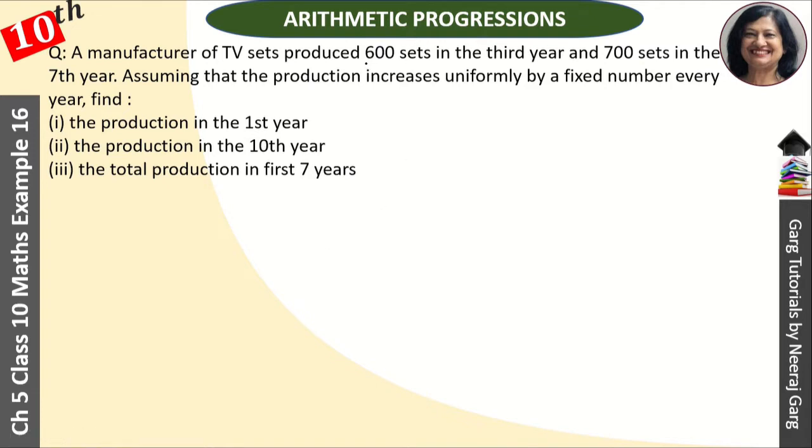So first of all, let's see what we have given. 600 sets in the third year, this means a₃ = 600, and 700 sets in the seventh year, so a₇ = 700.